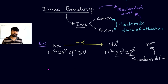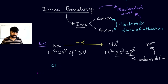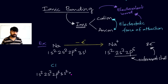Let's take another example — chlorine (Cl), with atomic number 17. Its electronic configuration is 1s² 2s² 2p⁶ 3s² 3p⁵. Chlorine can attain the octet in two ways: it could lose all seven outermost electrons to form Cl⁺⁷, but that is highly unstable. Alternatively, it can gain one electron into the 3p orbital.